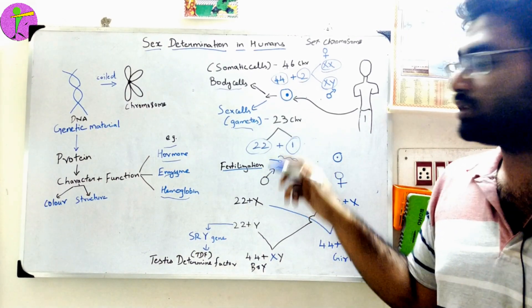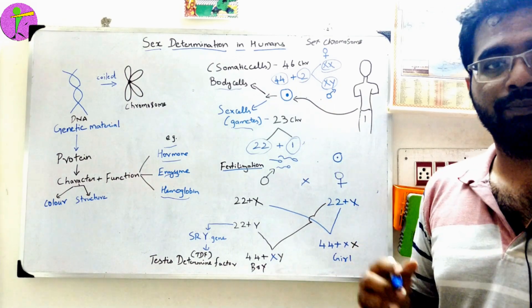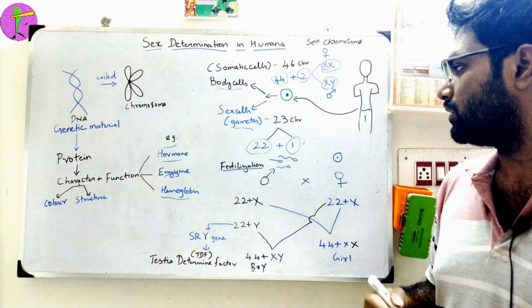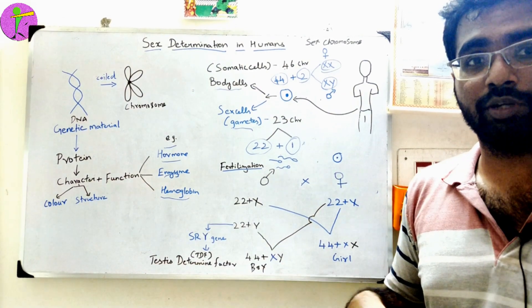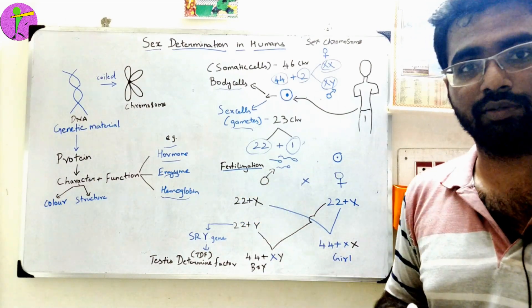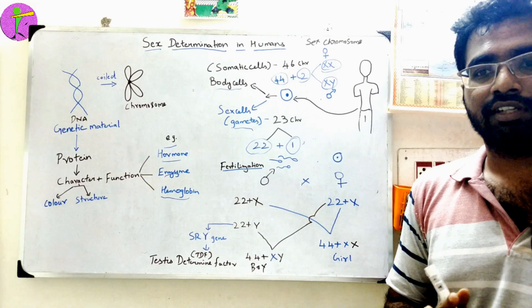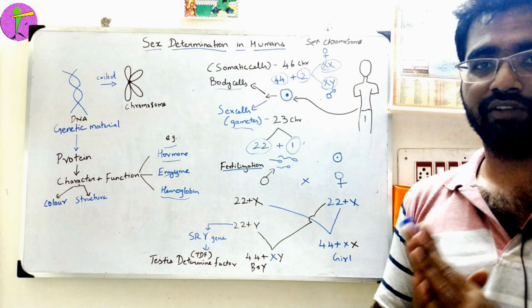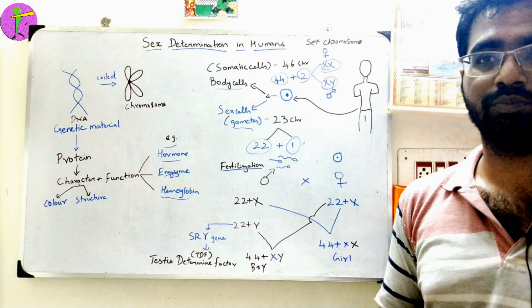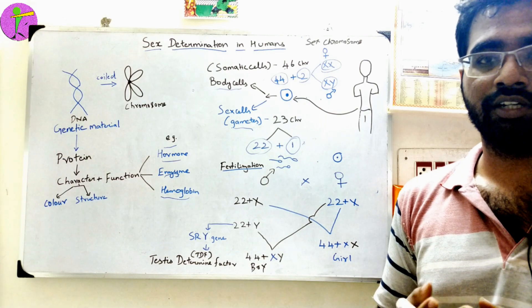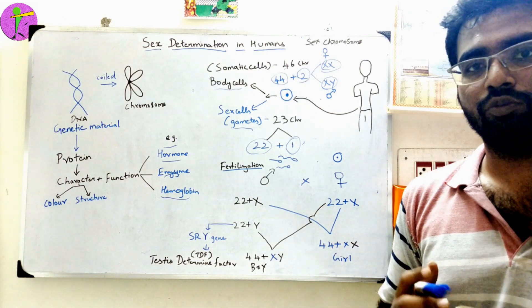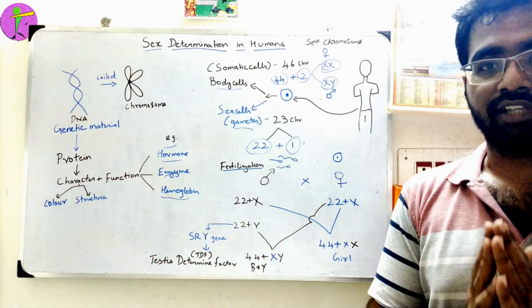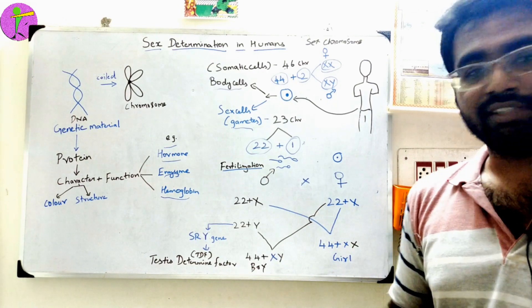The sex chromosome can be X or Y. In the fertilization process, the male will produce sperms and the female will produce eggs. These two cells combine into one cell — that is the zygote — and the sex is determined.